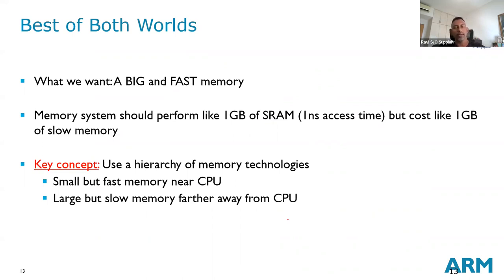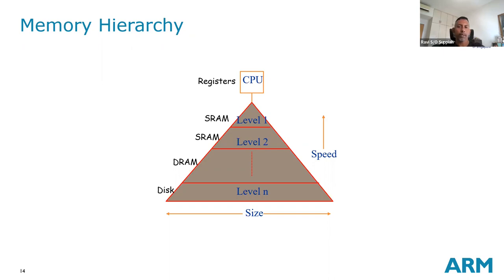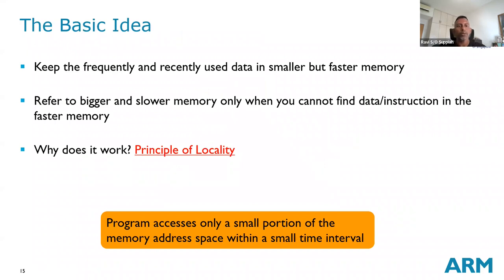The idea is: what is fast, we want it near the CPU, but fast is expensive so we can only have a small amount. Similarly we want a lot of storage, but large storage is slower so we keep it further away from the CPU. We try to match these through a hierarchy — the memory hierarchy — where larger size means slower speed, and as you go closer to the CPU, speed is highest. Registers are the fastest because they are internal to the CPU.